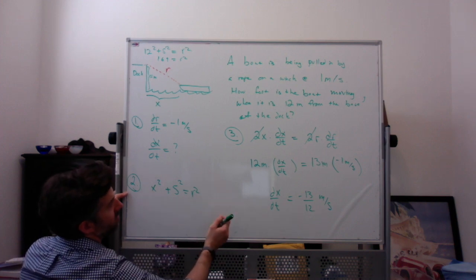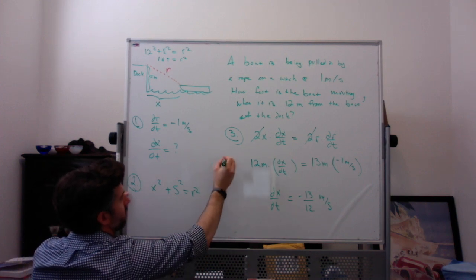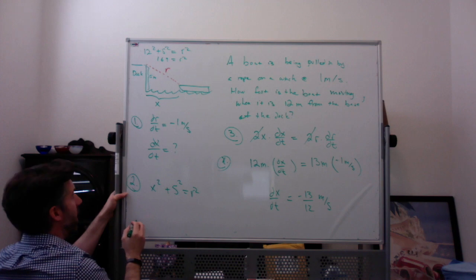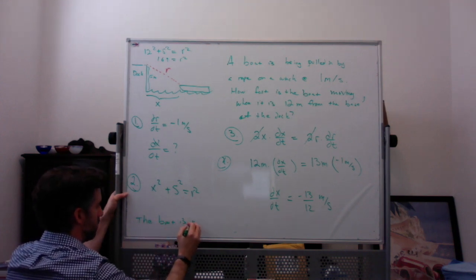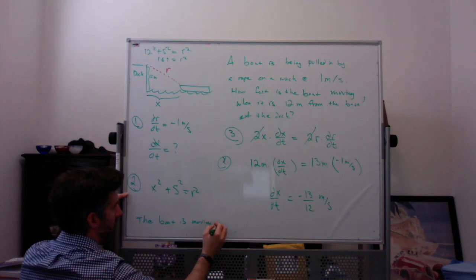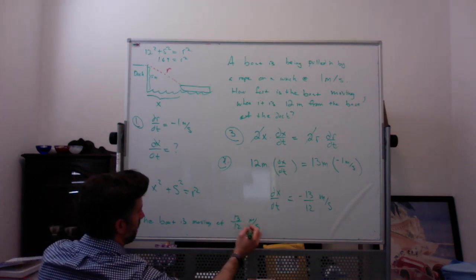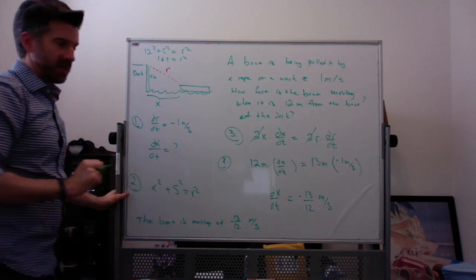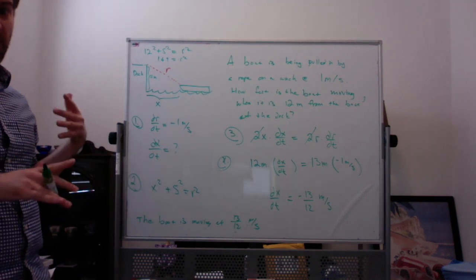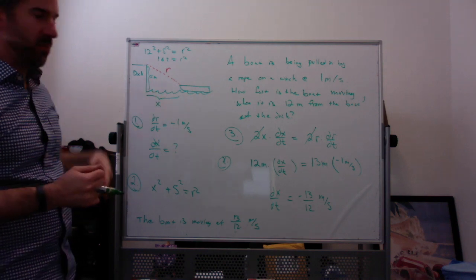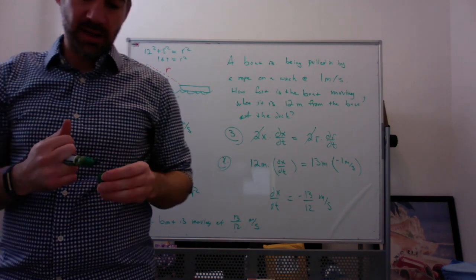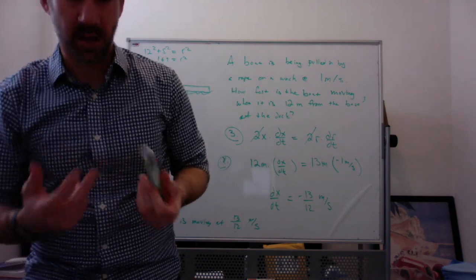So if I was going to write out an answer, and I guess this is step 4 when you plug stuff in, I would say that the boat is moving at 13/12 meters per second. And I would write it as positive because they kind of say like to the left is negative, to the right is positive. It just happens that it's negative because X is getting smaller. The speed of the boat shouldn't be a negative number. It's only a positive number.